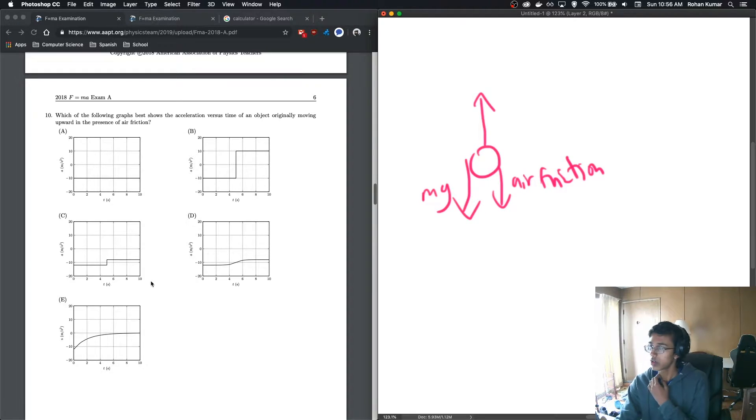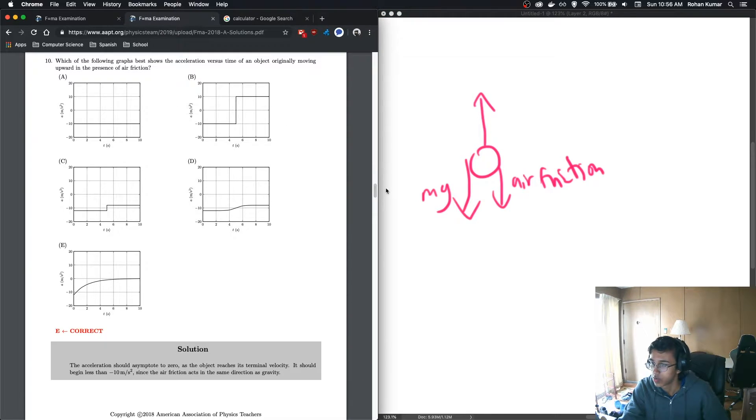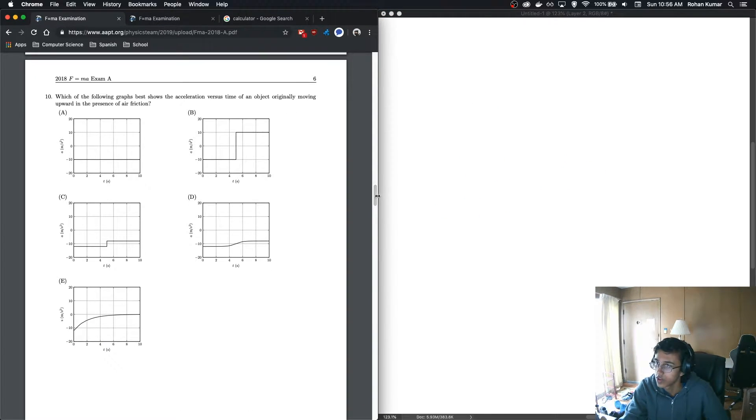But it also reaches the terminal velocity. So it should not be D because it never goes to zero. But E makes more sense because it slowly, slowly decreases in magnitude until it reaches zero, which is terminal velocity. So I think the answer should be E. Let's look at the answer. And we are correct.